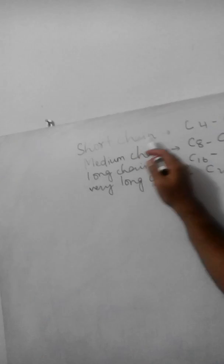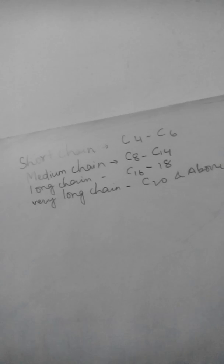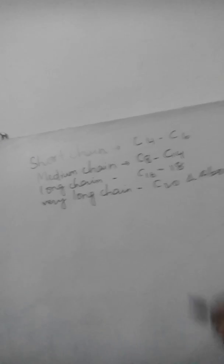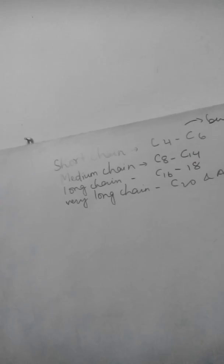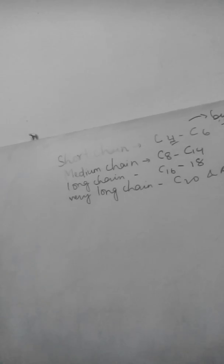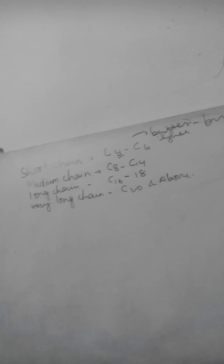Short chain fatty acids are those containing four to six carbon atoms. A good example of short chain is butter. The name butter is derived from butyric acid, which contains four carbon atoms — this is an example of short chain saturated fatty acids.